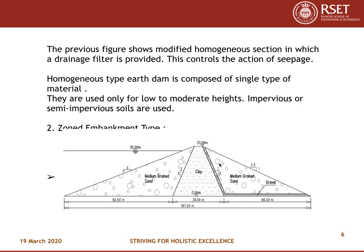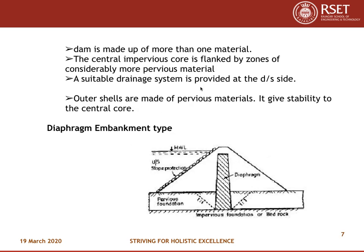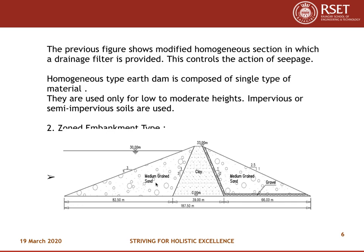Zoned embankment type: The dam is made up of more than one material. A central impervious core is flanked by zones of considerably more pervious material. A suitable drainage system is provided on the downstream side, and the outer shells are made of pervious materials, which give stability to the central core. The zones typically include medium green soil, clay at the core, and gravel on the sides.